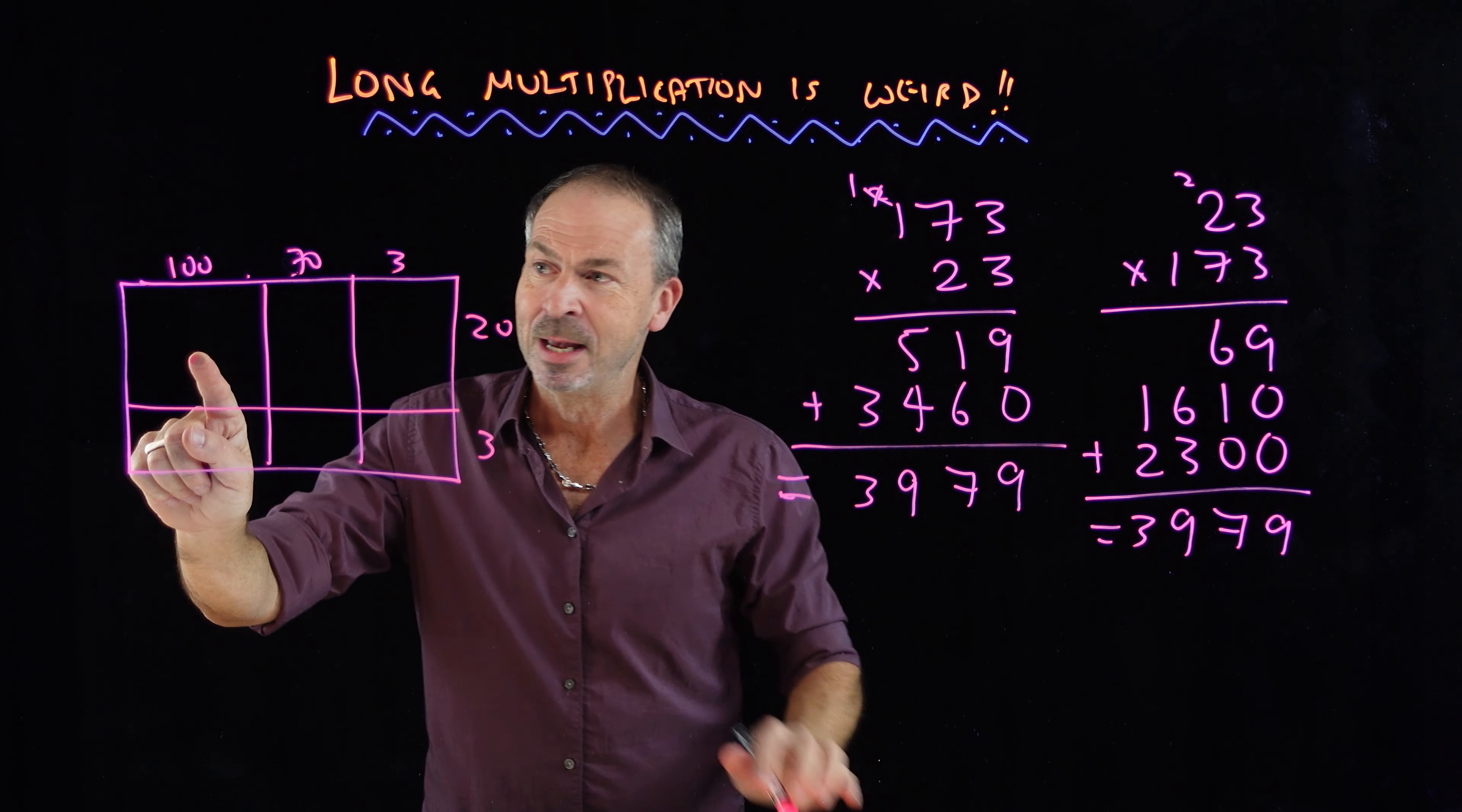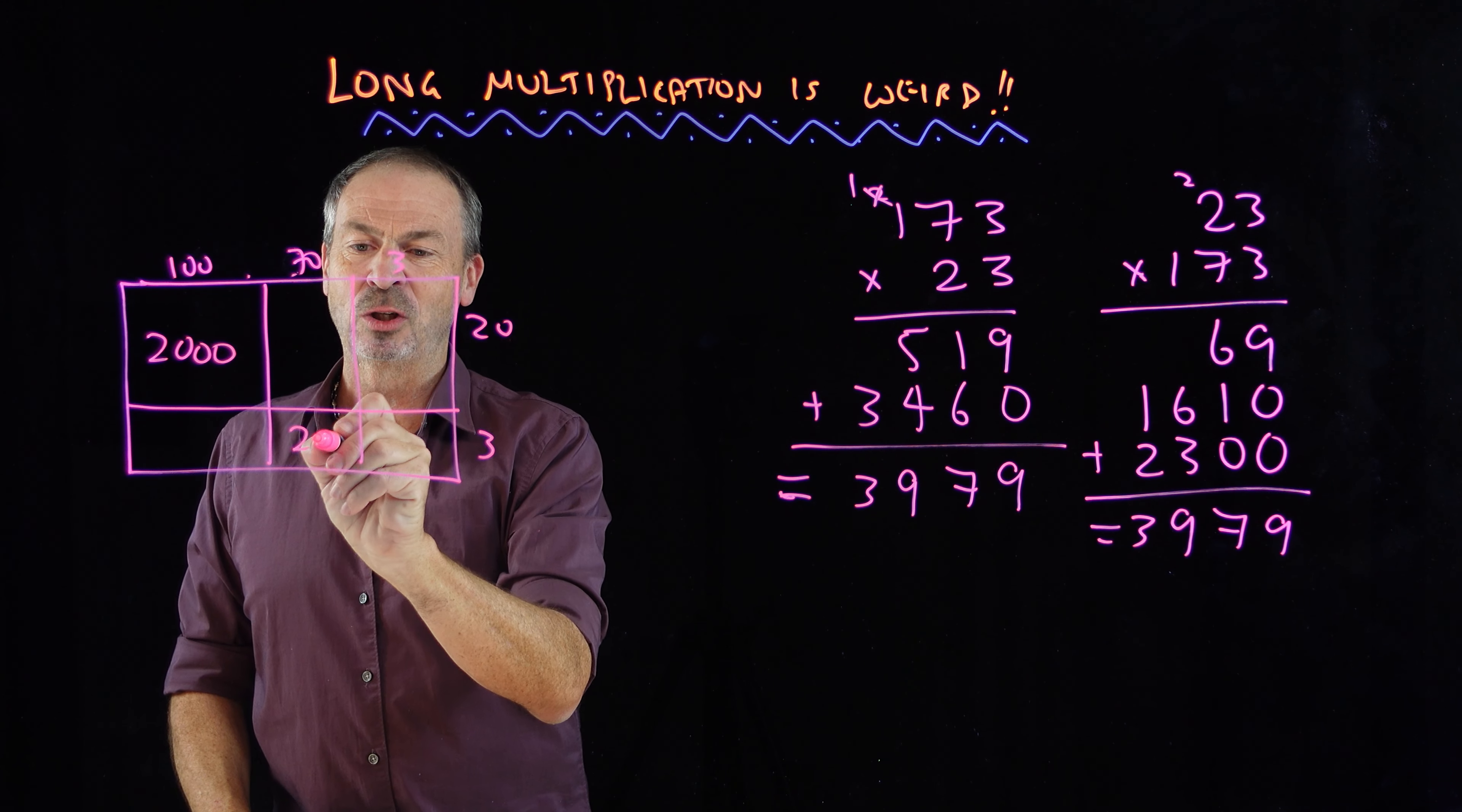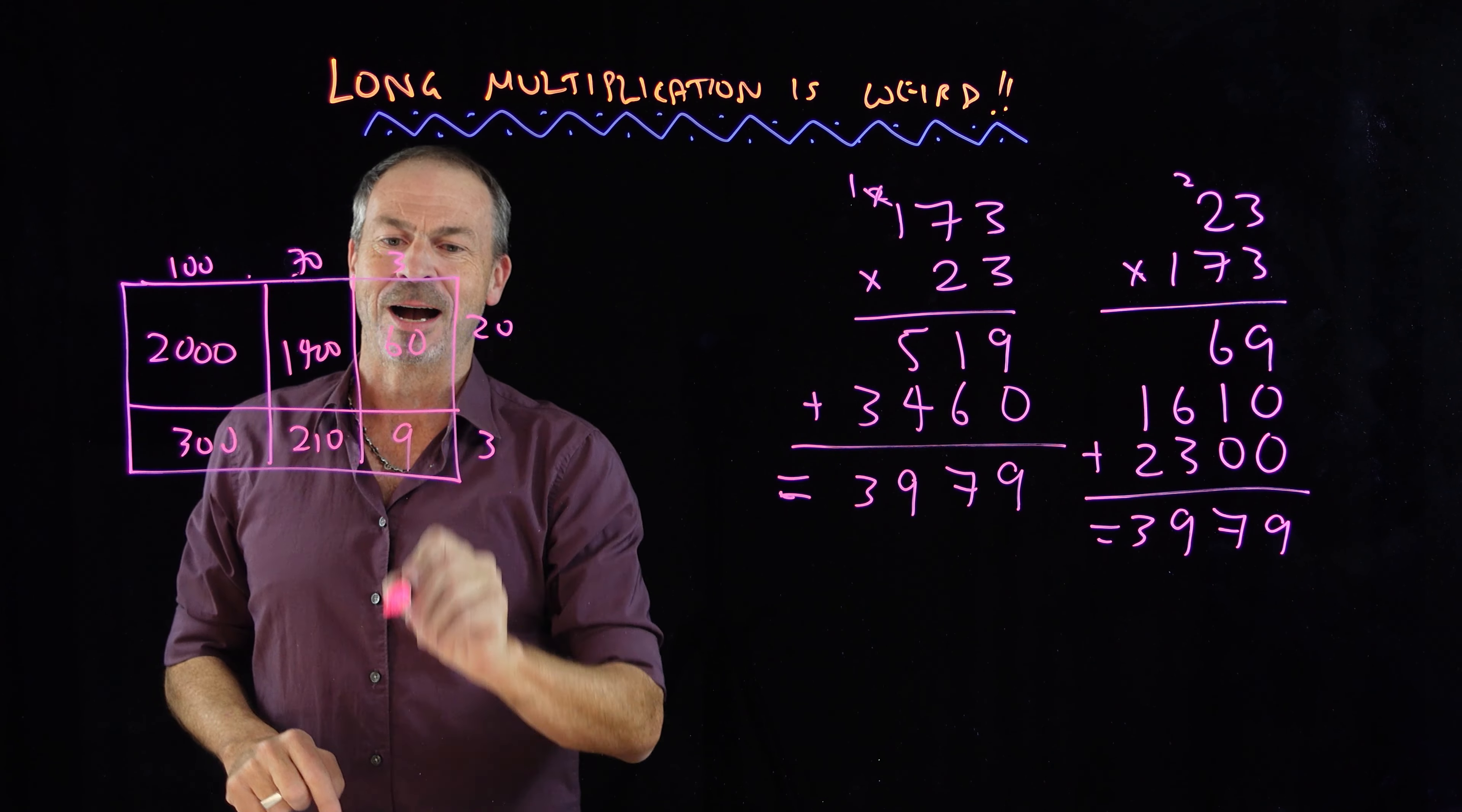For example, this piece here is 100 long and 20 wide. The area of that piece is going to be 100 times 20, which is 2,000. I can work out the area of each of these six pieces in turn. 70 times 3 is 210. 3 times 20 is 60. 70 times 20 is basically 14 with a couple of zeros: 1,400. 100 by 3 is 300, and 3 by 3 is 9.